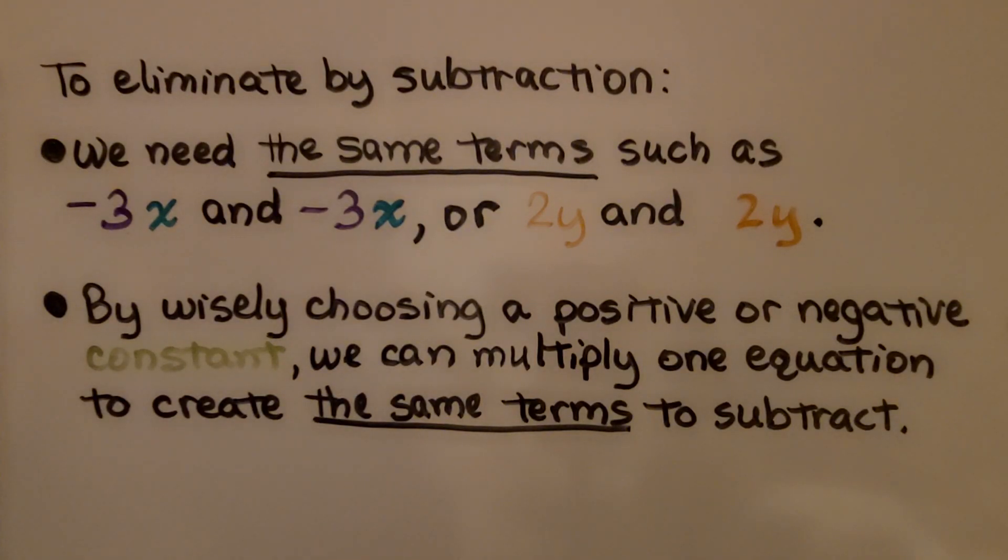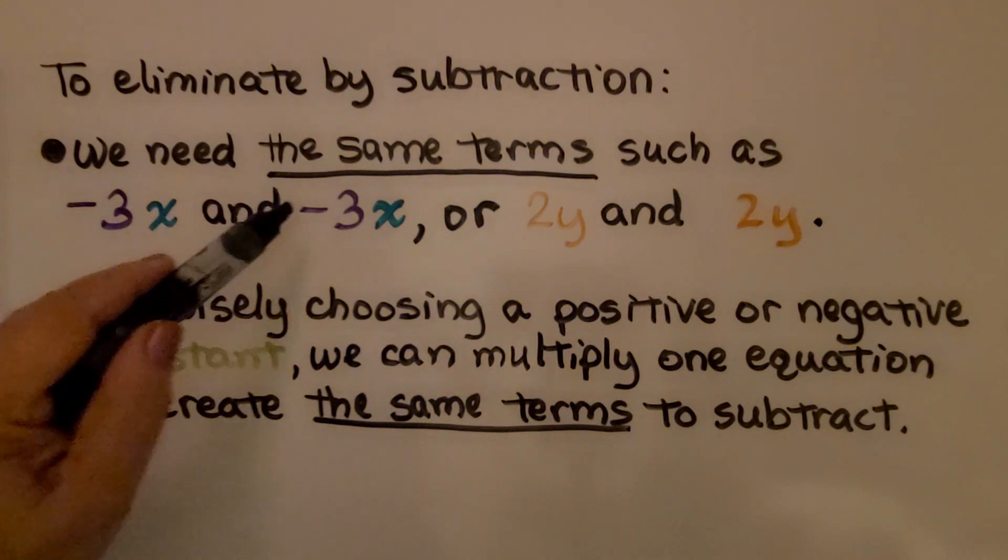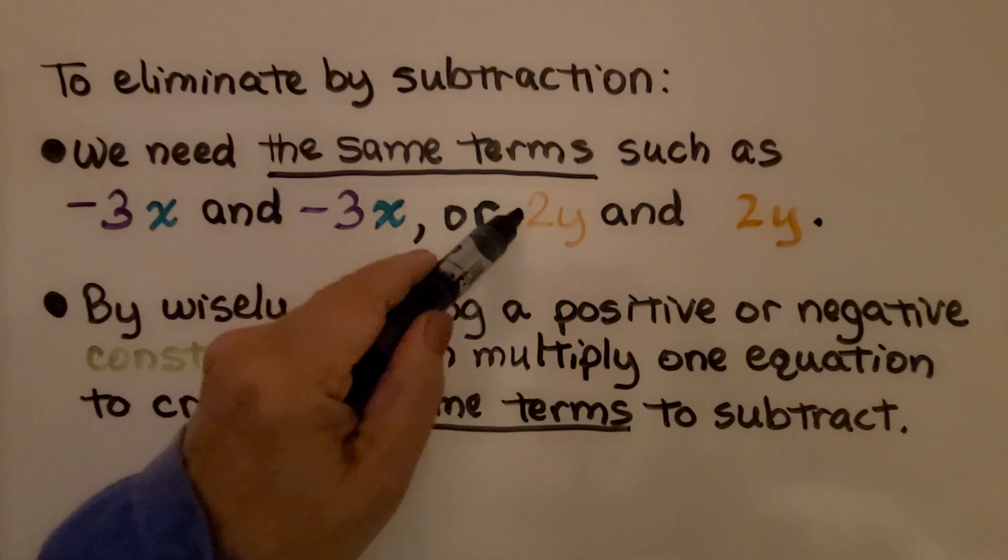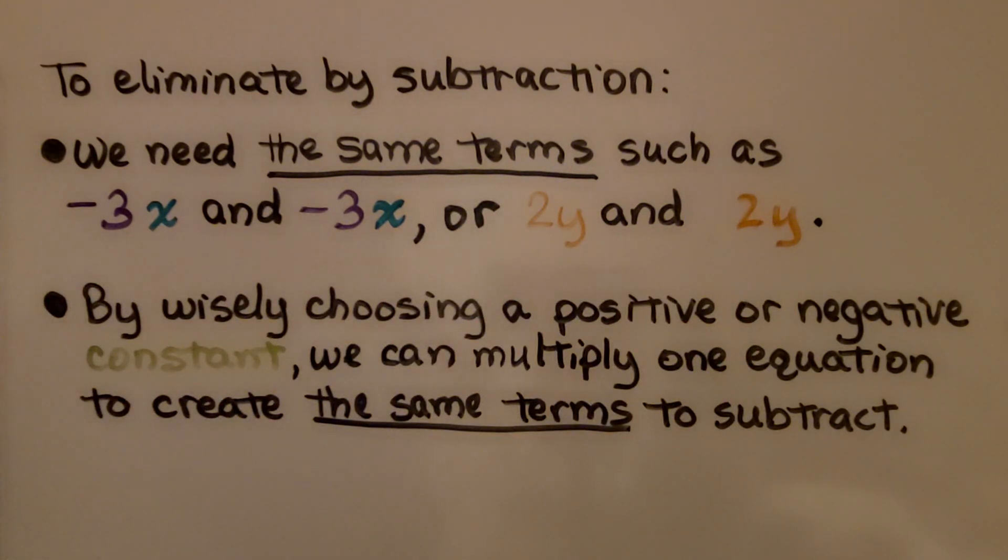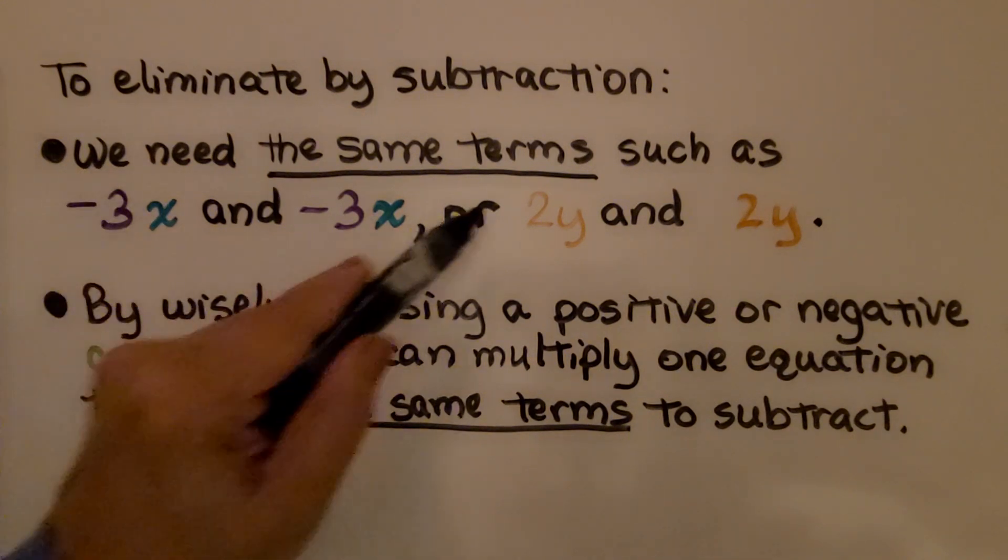To eliminate by subtraction, we need the same terms, such as negative 3x and negative 3x, or 2y and 2y. They're both positive. By wisely choosing a positive or negative constant, we can multiply one equation to create the same terms to subtract.